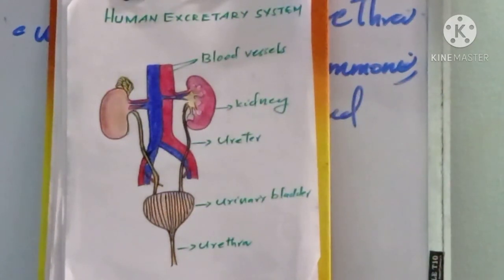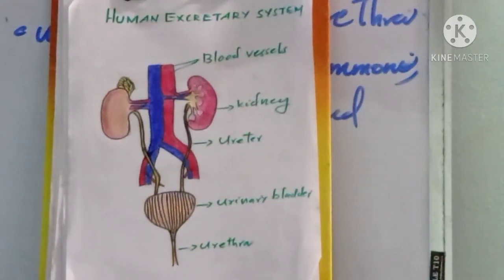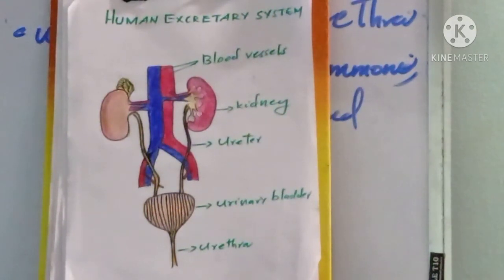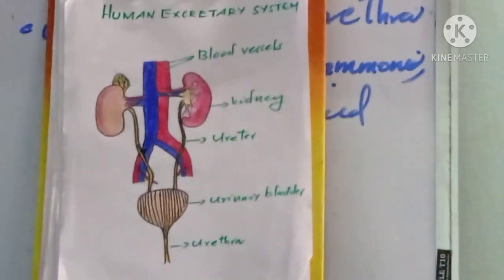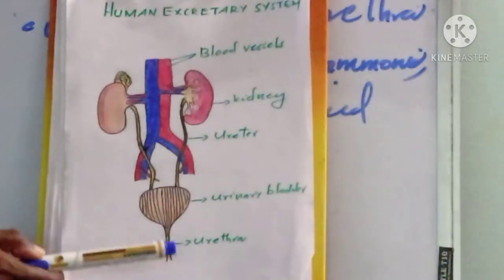The human excretory system is made up of the kidneys, ureters, urinary bladder, and urethra. These are the important parts of the human excretory system.